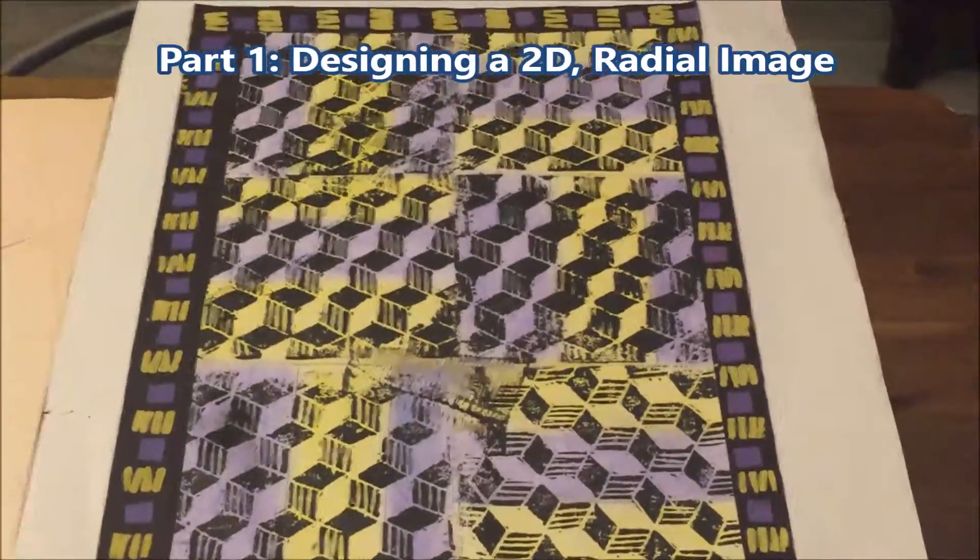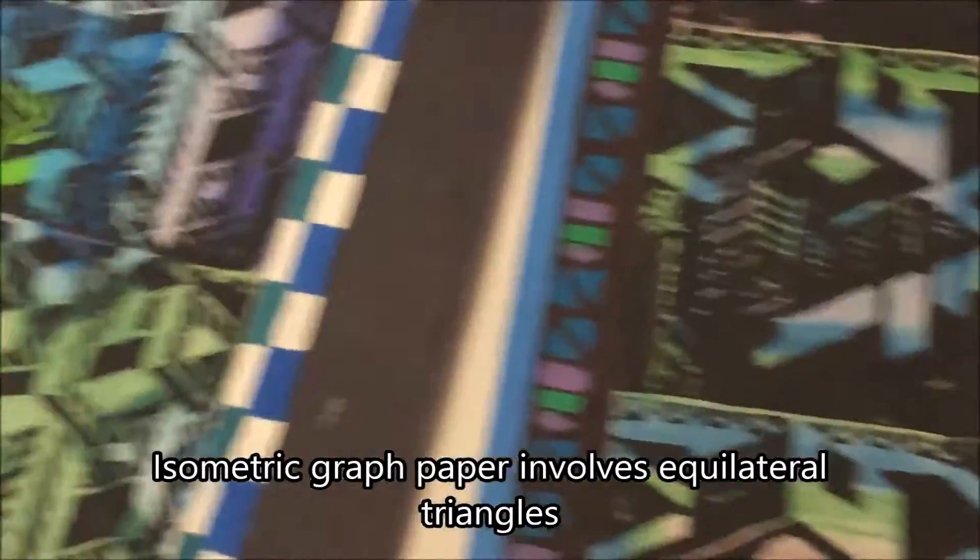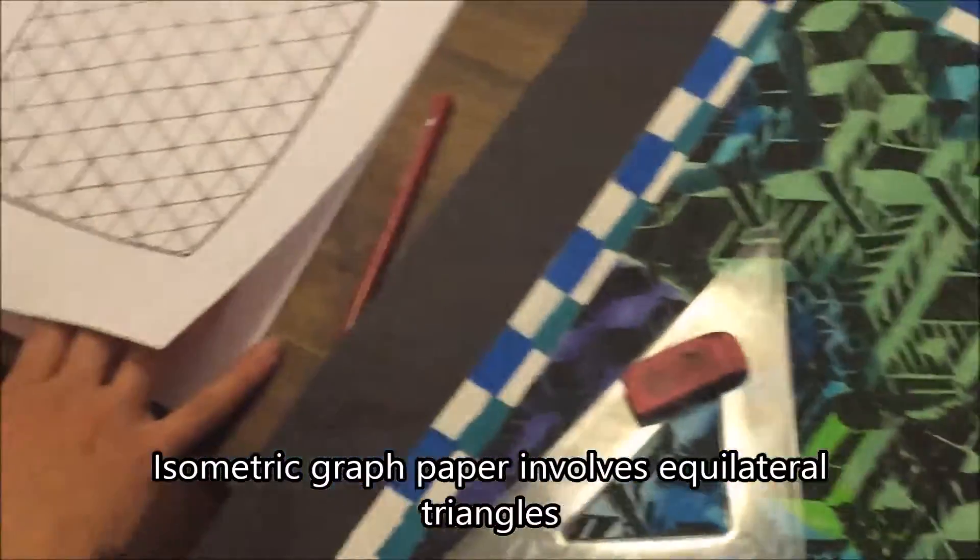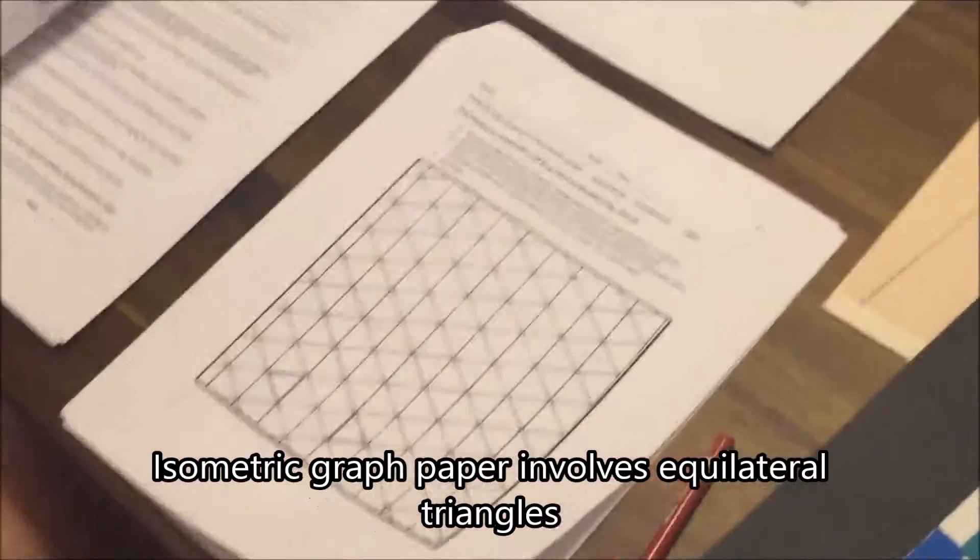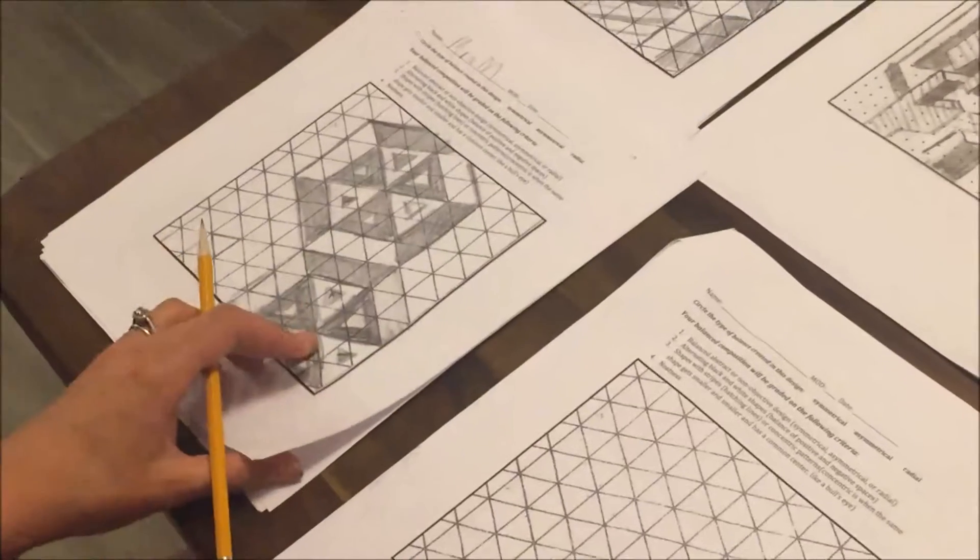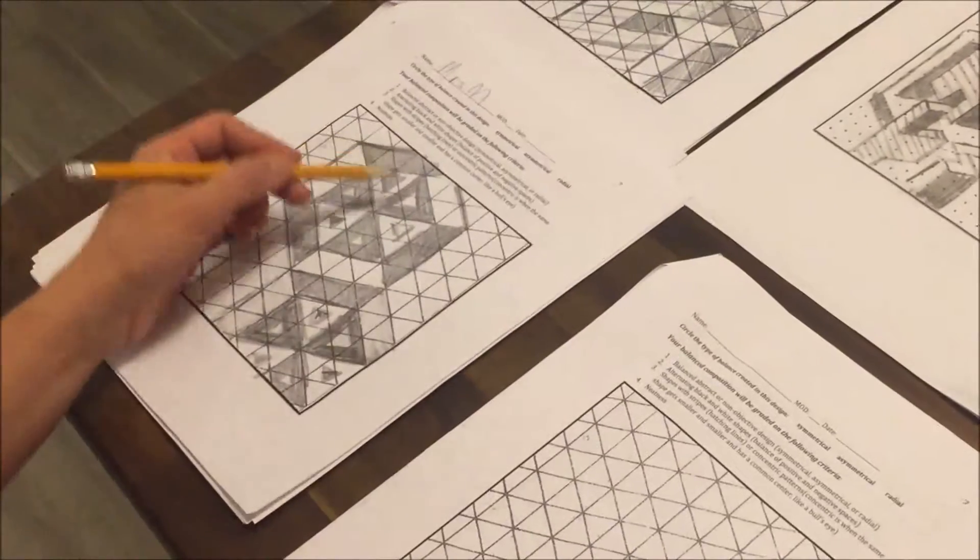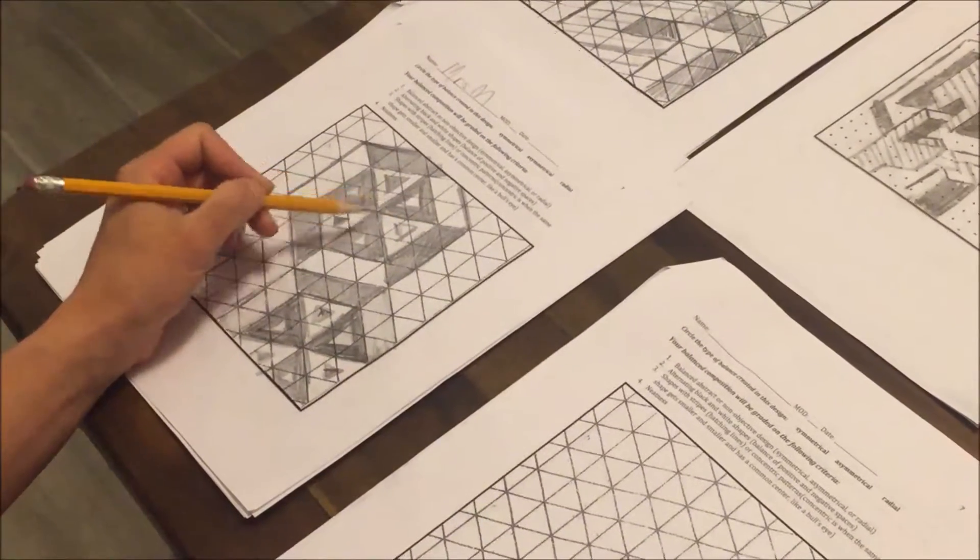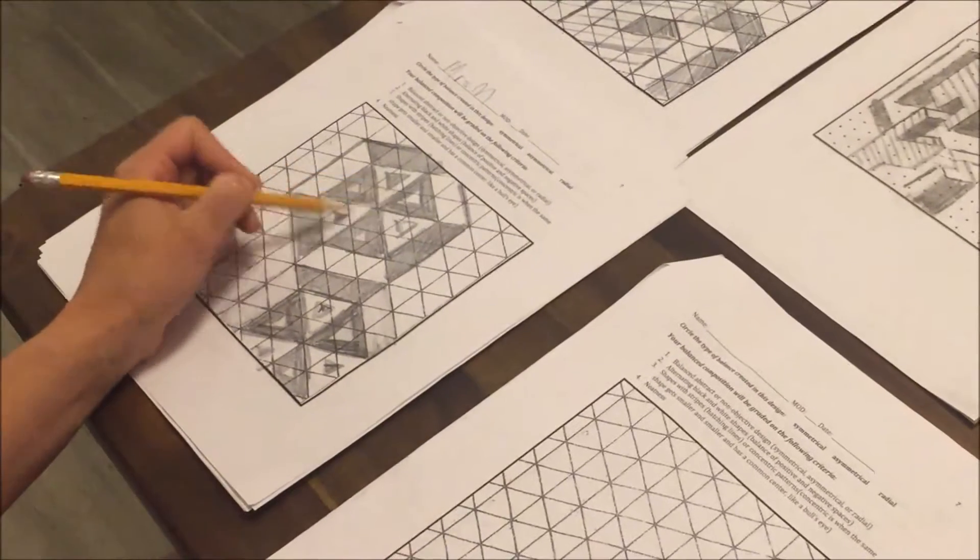Hi. Today we're going to be learning about isometric design. Artists use it in order to make either 2D or 3D artworks. You can see here some examples of 2D designs which are more radial, meaning that they're rotating around in a circular design.